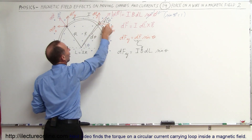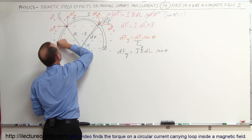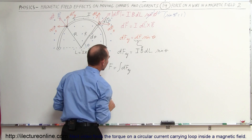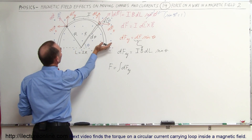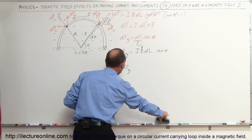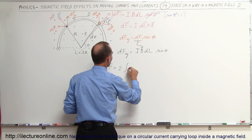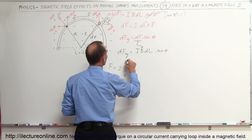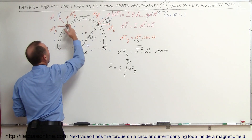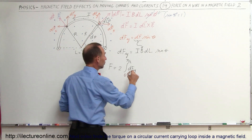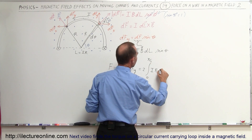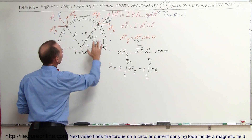Now we have the Y component of DF for a small line segment, so we can integrate over the entire semicircle. The total force F equals the sum of all the little DFy values, integrating from 0 to 180 degrees. I prefer to integrate from 0 to 90 degrees and double it, so F = 2 times the integral from θ = 0 to θ = π/2 of DFy, giving us twice the force from half the segment. Substituting in, this equals 2 times the integral from 0 to π/2 of I·B·DL.